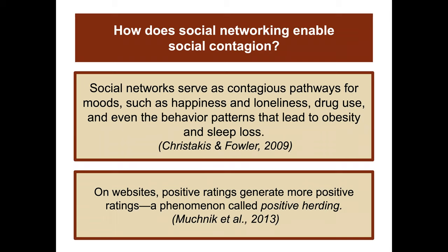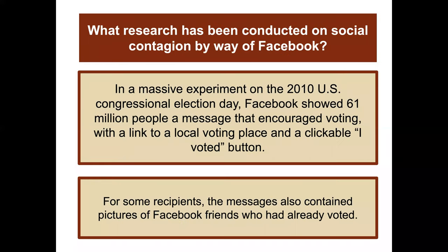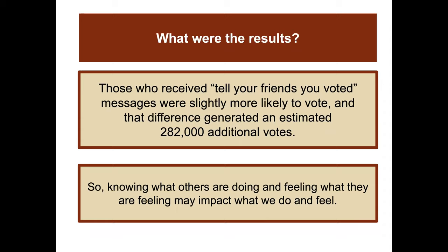How does social networking enable social contagion? Social networks serve as contagious pathways for moods such as happiness and loneliness, drug use, and even behavior patterns that lead to obesity and sleep loss. On websites, positive ratings generate more positive ratings — called positive herding. In a massive experiment on the 2010 US Congressional Election Day, Facebook showed 61 million people a message encouraging voting. Those who also saw pictures of Facebook friends who had already voted were slightly more likely to vote, generating an estimated 282,000 additional votes. Knowing what others are doing and feeling may impact what we do and feel.